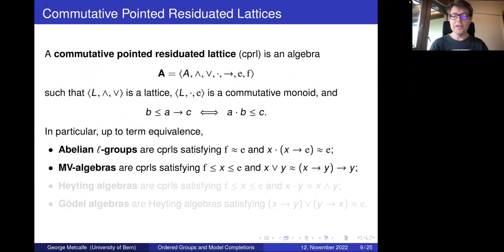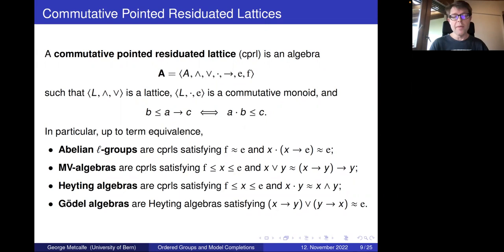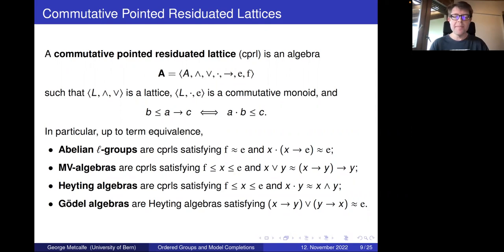MV algebras are CPRLs where F is the bottom element, E is the top element, and the join is expressed as (X arrow Y) arrow Y. Similarly, Heyting algebras are CPRLs where again F is bottom and E is top and the multiplication and the meet coincide. Gödel algebras are Heyting algebras that satisfy the so-called prelinearity property. CPRLs are much more general — they provide semantics for many substructural logics. For example, CPRLs where X arrow (F arrow F) equals X — that is, involuted ones — give the algebraic semantics for multiplicative additive linear logic.